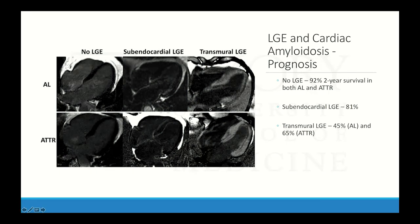As far as prognosis: without late gadolinium enhancement, two-year survival for amyloid is 92%. Subendocardial enhancement drops that to 81%. With transmural involvement, two-year survival is 45% for AL amyloid and 65% for TTR amyloid.